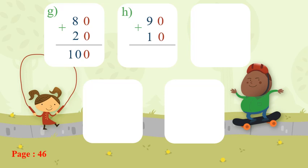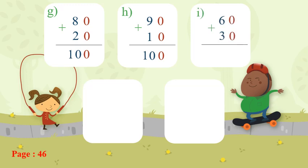Number: 90 plus 10. Ones plus ones, tens plus tens. Zero plus zero equals zero. Nine plus one — six on my mind, three on my hand — after six: seven, eight, nine. The answer will be ninety.